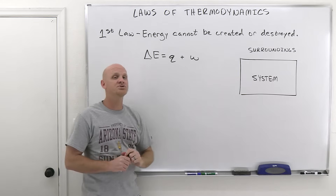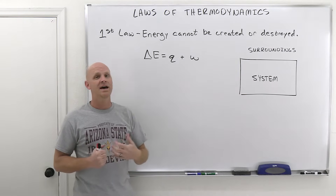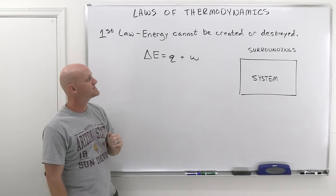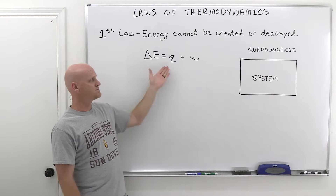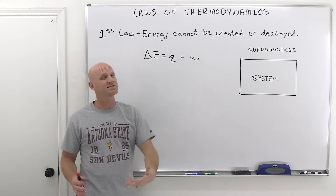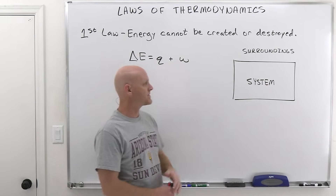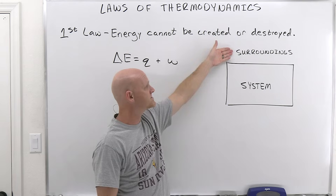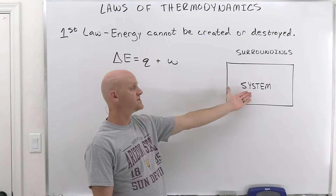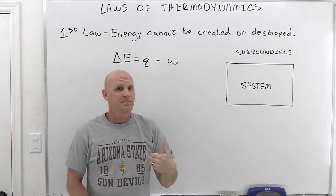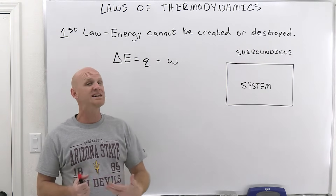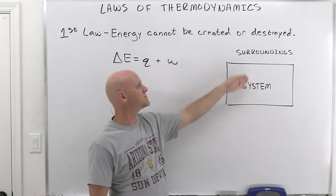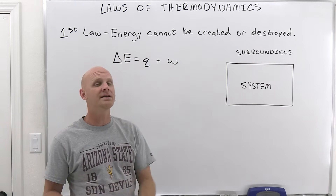Quick review of the first law: energy cannot be created or destroyed — some people simply say the conservation of energy. It can also be expressed mathematically as: the change in internal energy of a system equals Q plus W. It turns out there are only two things in the universe — whatever you're looking at, which we call the system, and then everything else, which we call the surroundings. Energy can be transferred between the system and the surroundings, but it cannot be created or destroyed.